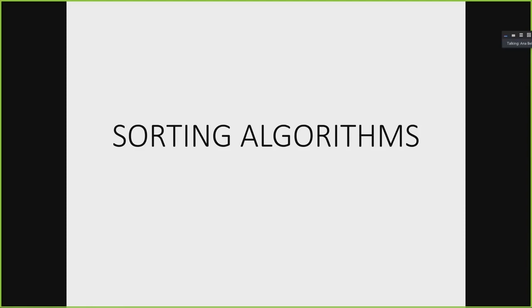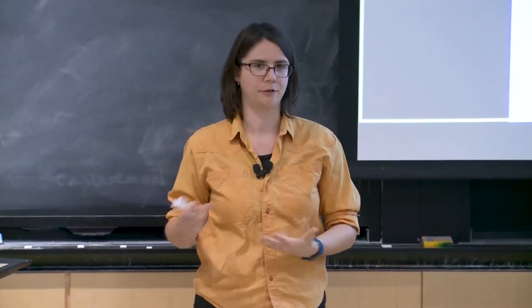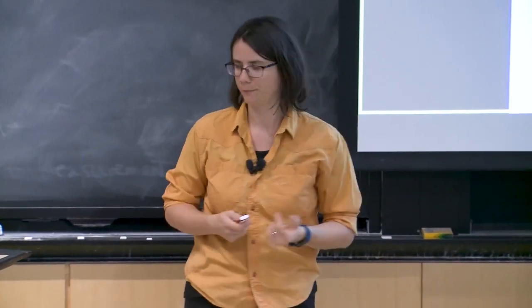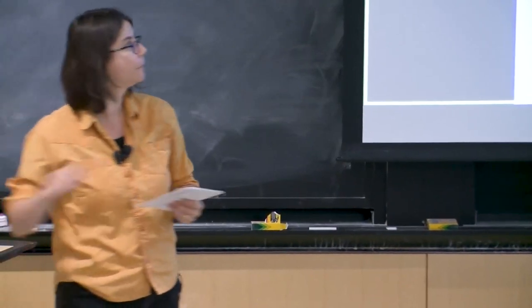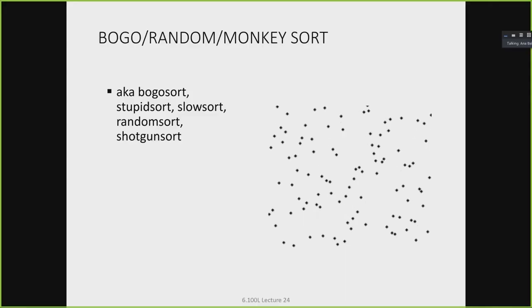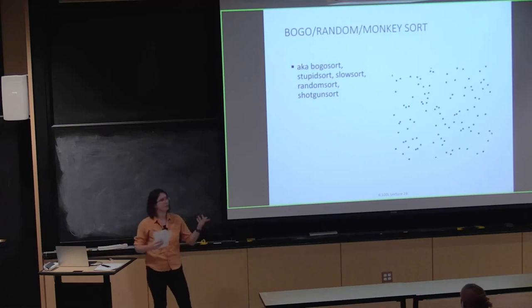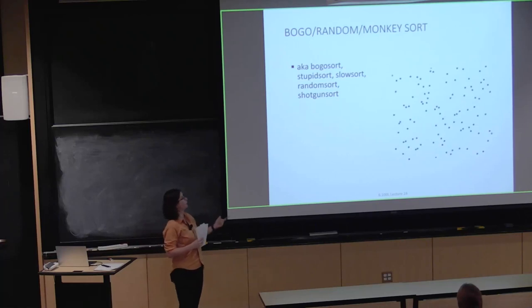So now we're going to look at a bunch of different sorting algorithms. We'll start with some really bad ones and work our way up to what is considered one of the best sorting algorithms. First, let's look at bogo sort — from 'bogus sort,' also called random sort or monkey sort. There are actually competitions where people come up with really bad sorting algorithms that make forward progress in a really weird way.